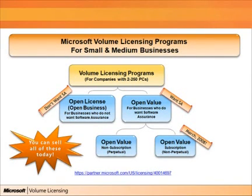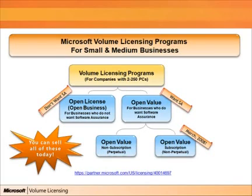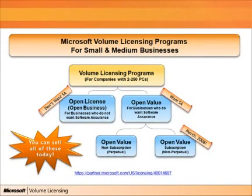Open value, on the other hand, is for clients who not only want the volume licensing benefits, but also want the software assurance benefits in addition. So they will receive things like upgrade protection, e-learning courses, office home use rights, cold disaster recovery, employee purchase programs, and all those additional items through the software assurance benefits.